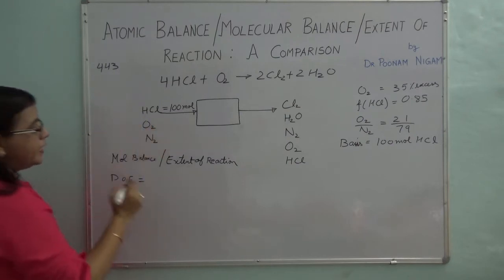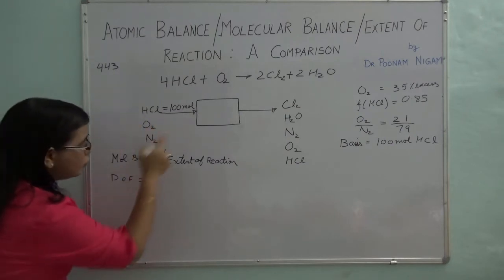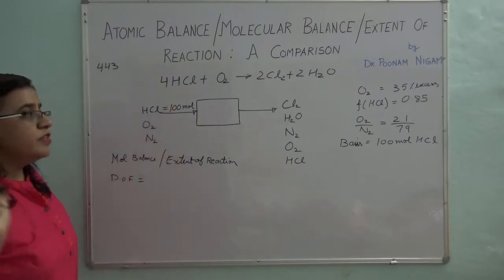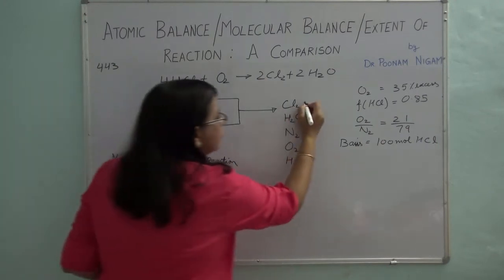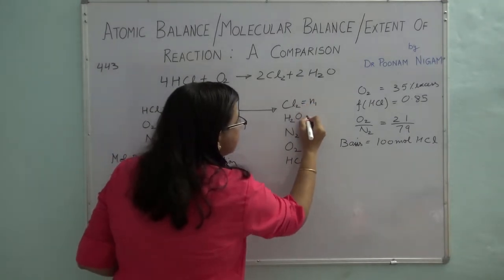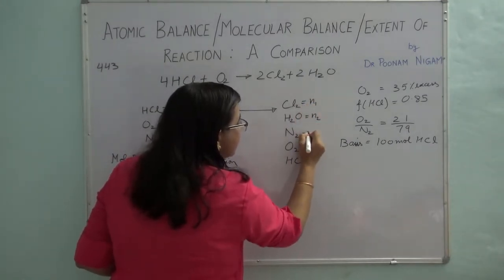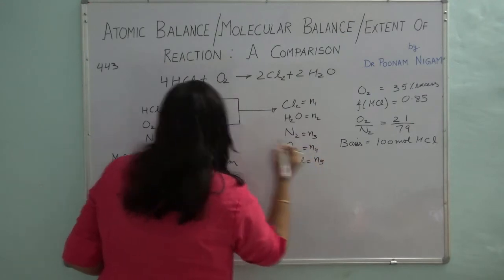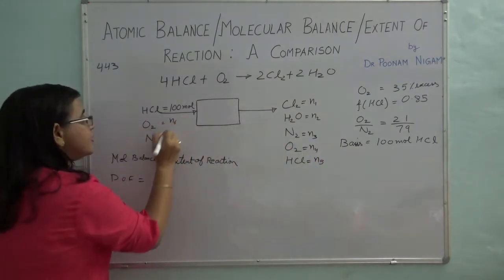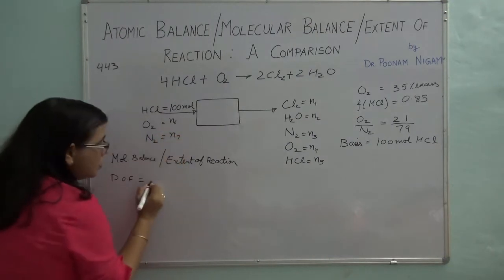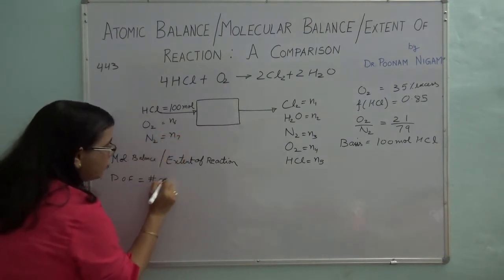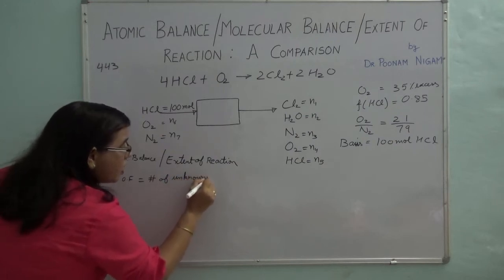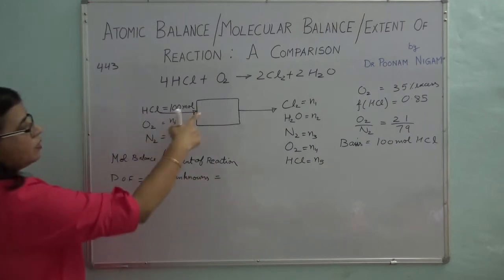For degree of freedom, first you count how many unknown variables you have. Let's mark them: N1, N2, N3, N4, N5, N6, N7. So the number of unknown variables is seven.